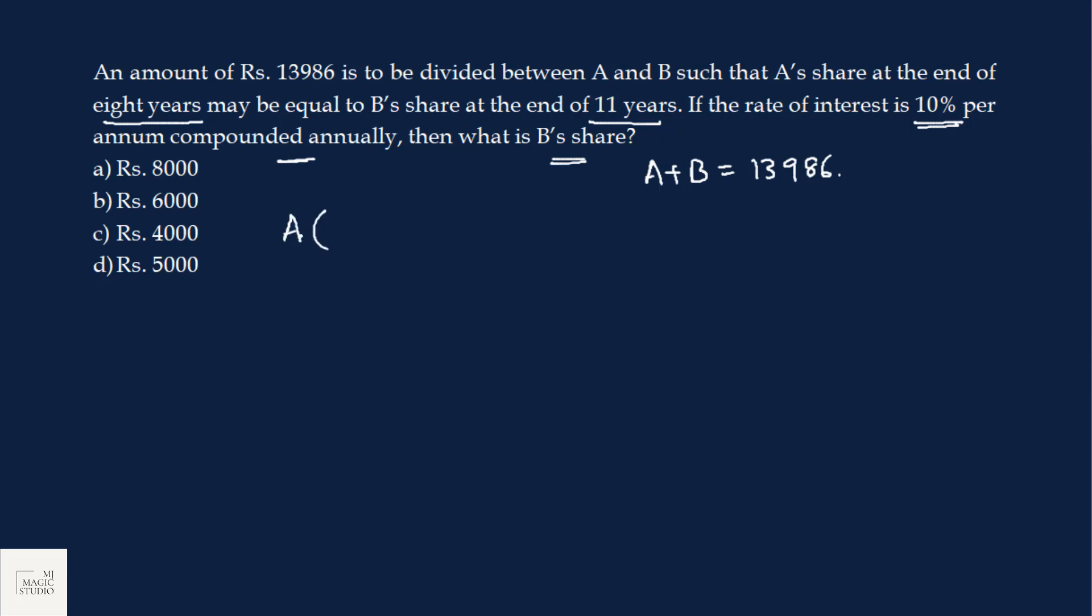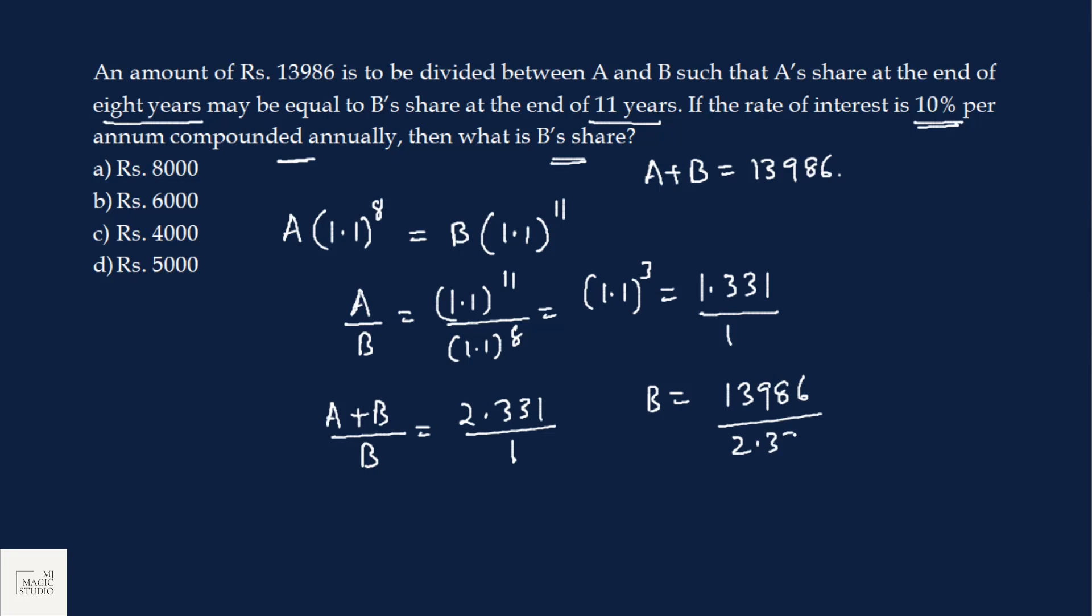A's share after 8 years would be A into 1.1 to the power 8 because rate of interest is 10%. And this equals B's share after 11 years. So A by B is 1.1 to the power 11 by 1.1 to the power 8. That is 1.1 to the power 3. 11 cube is 1.331. 1.331 by 1. So if I add plus 1 on both sides, A plus B by B equals 2.331 by 1.